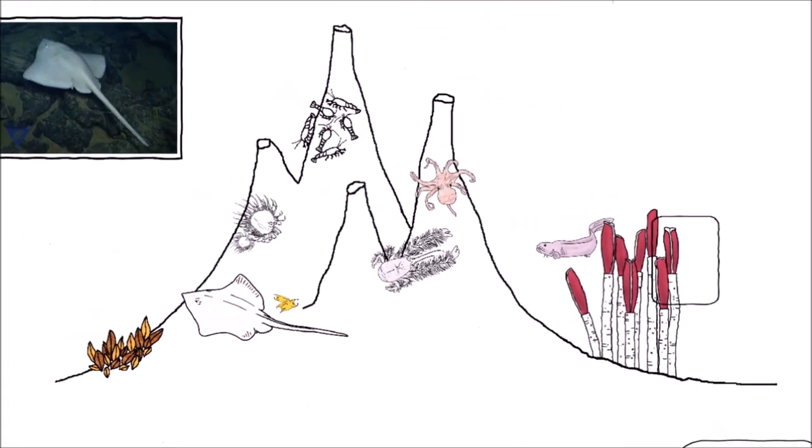But not only at the black smokers, also on the manganese nodules and cobalt crusts you can find loads of life. Here they don't have those hot, energy-spitting ovens, so they have to live off whatever falls through the water column to the ocean floor. It's a harsh life, and the animals have to be highly adapted.